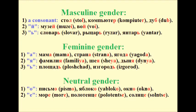The nouns which end in А or in the sign of palatalization refer to feminine gender. For example: мама (mom), страна (country), ягода (berry), фамилия (last name), шея (neck), дыня (melon), площадь, изгородь (fence).